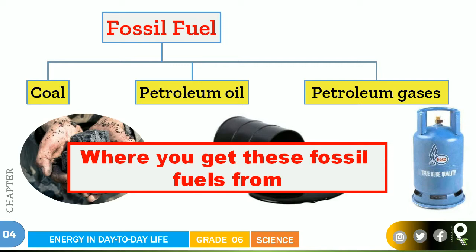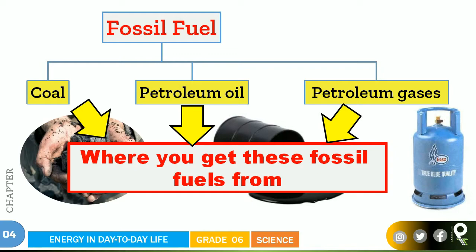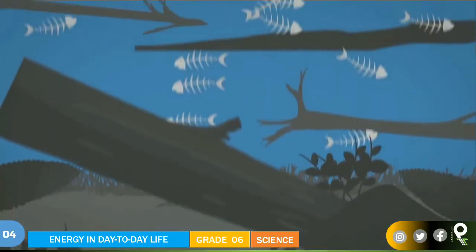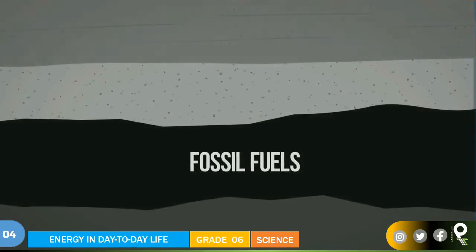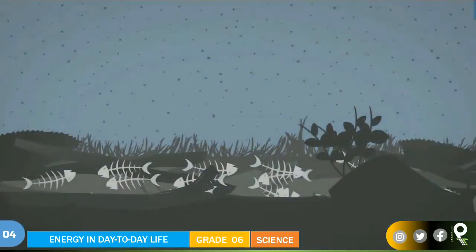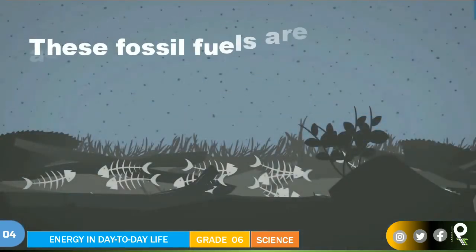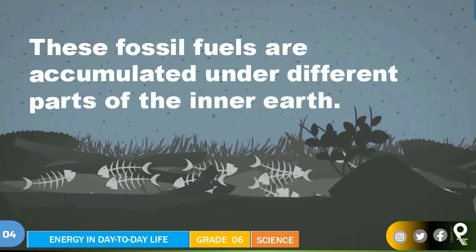Where do you get these fossil fuels from? Where do you get this coal from, where do you get this petroleum oil from, where are you getting these petroleum gases from? The fossil fuel is found in one area — the fossil fuels are formed. These fossil fuels are accumulated under different parts of the inner earth. Inside the earth, the fossil fuels are accumulated or saved under different parts of the inner earth.